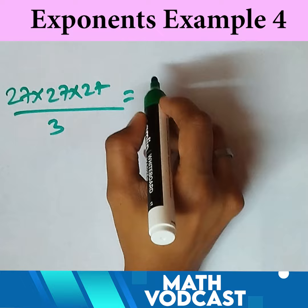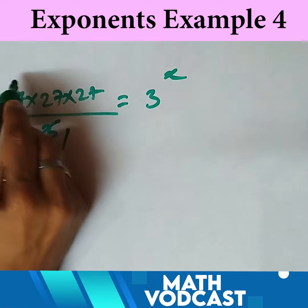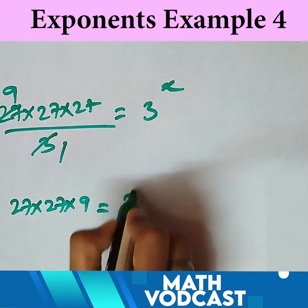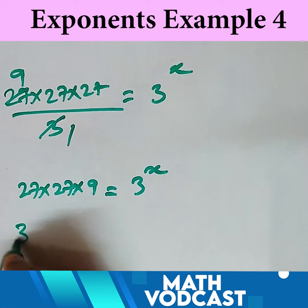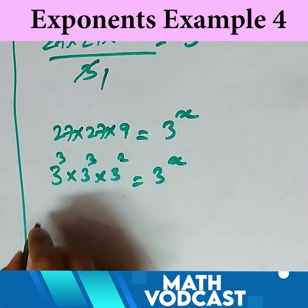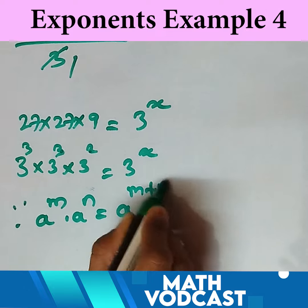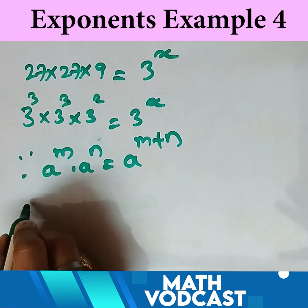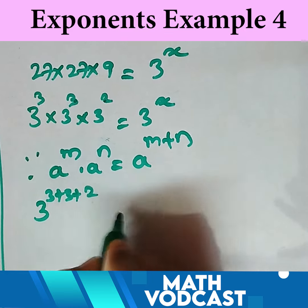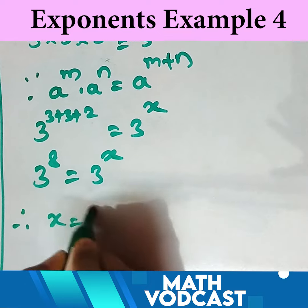So we have 27 times 27 times 9 equals 3 raised to x. Converting: 27 is 3 cubed, and 9 is 3 squared, so this becomes 3 cubed times 3 cubed times 3 cubed times 3 squared equals 3 raised to x. Applying the rule a raised to m times a raised to n equals a raised to (m plus n), we get 3 raised to (3 plus 3 plus 3 plus 2) equals 3 raised to x, giving 3 raised to 8 equals 3 raised to x. Therefore x equals 8.